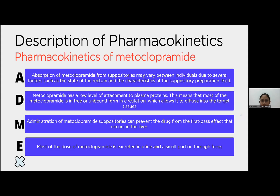Hello everyone, my name is Nilu Kadea, with the last three digits of my student number being 063. Today I would like to present the pharmacokinetics. The pharmacokinetics of metoclopramide: absorption of metoclopramide from suppositories may vary between individuals due to several factors, such as the state of the rectum and the characteristics of the suppository preparation itself. Metoclopramide has a low level of attachment to plasma proteins, meaning most of the metoclopramide is in the free or unbound form in circulation, which allows it to diffuse into the target tissues.